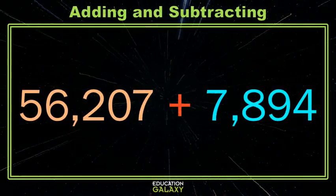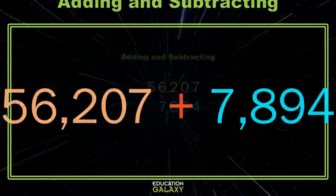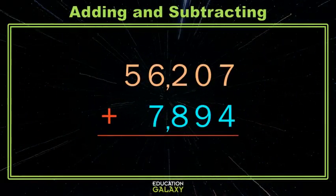This one's given to us horizontally. We like these better if they're written vertically, and we just align our place values. So all your ones go together, and all your tens go together, and so on.